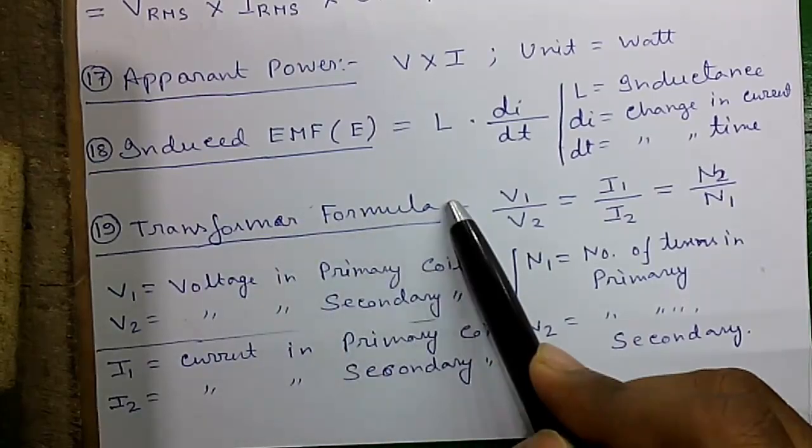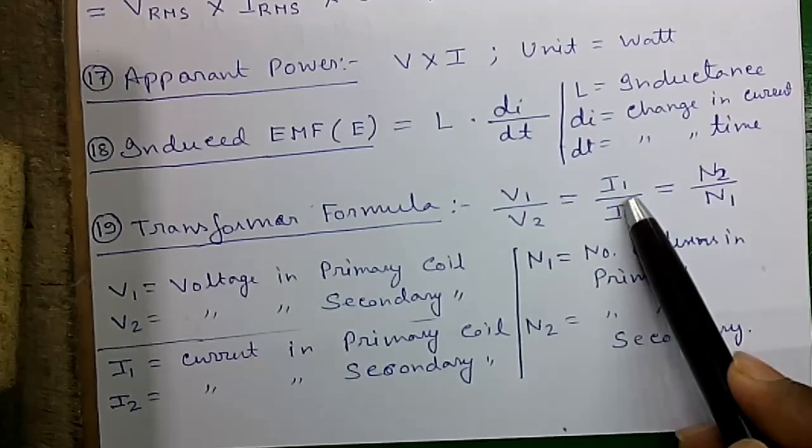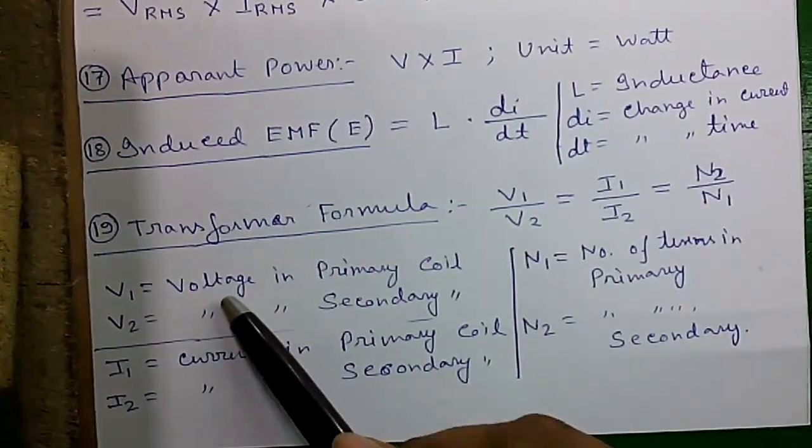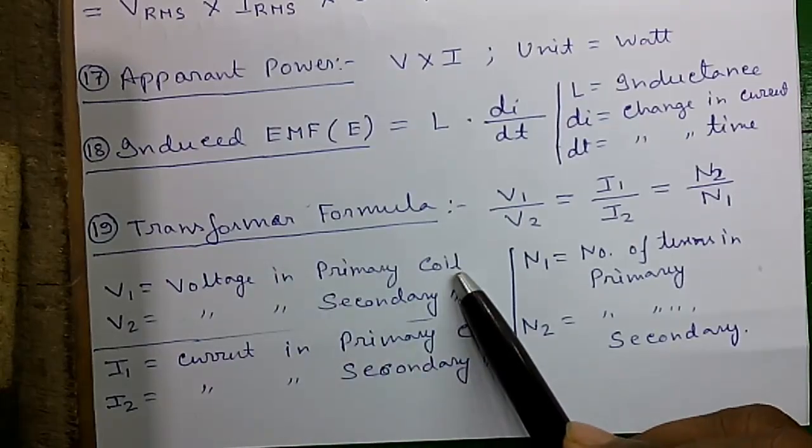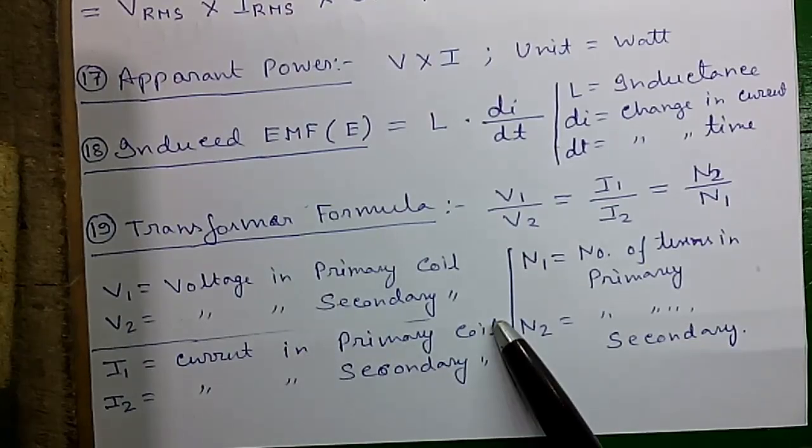Formula 19: Transformer formulas. V1 by V2 equals I2 by I1 equals N2 by N1, where V1 is the voltage in primary coil, V2 is the voltage in secondary coil, I1 is the current in primary coil.